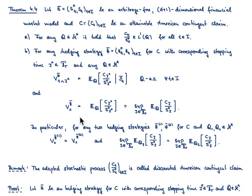From that fact one can easily derive the following properties. First, the initial value of our discounted American contingent claim is independent of the choice of the hedging strategy. And on the other hand, the optimal stopping problem is independent of the choice of the equivalent martingale measure Q.